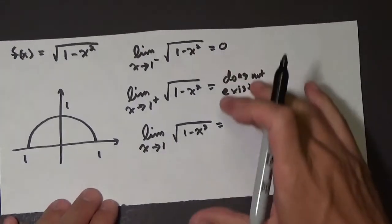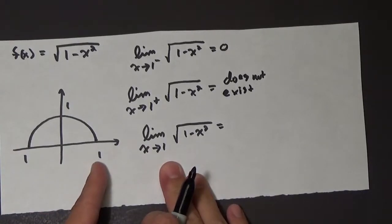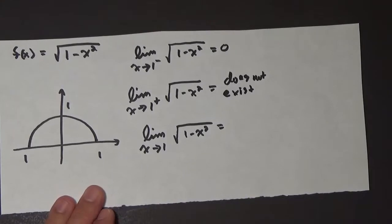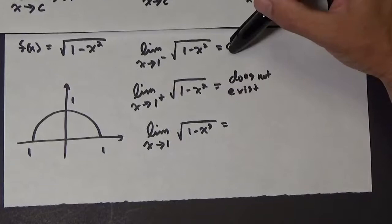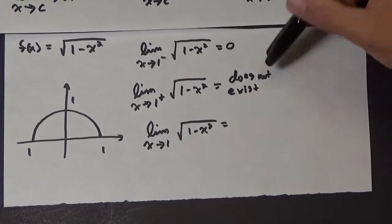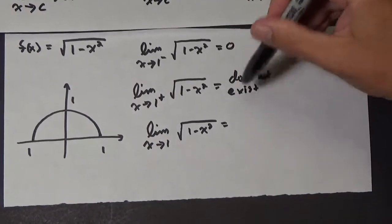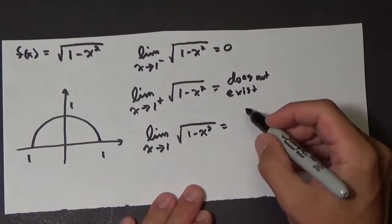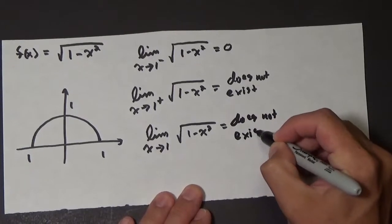Now that we have this information, we can answer this question: what is the limit as x approaches 1 of the square root of 1 minus x squared? According to this theorem, first of all, you need a left-hand limit, which we do, and we need a right-hand limit. Well, right there, this all falls apart because we don't have a right-hand limit. And the third thing is these would have to be equal. So because we don't have a right-hand limit, we can say that this does not exist.